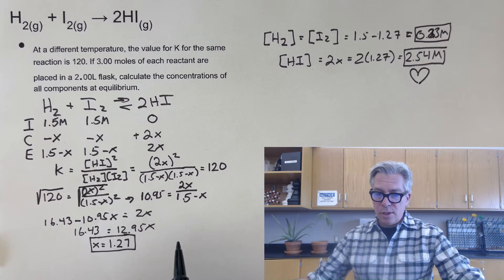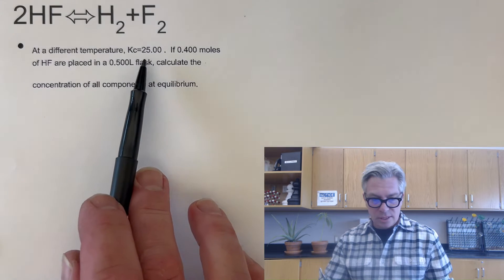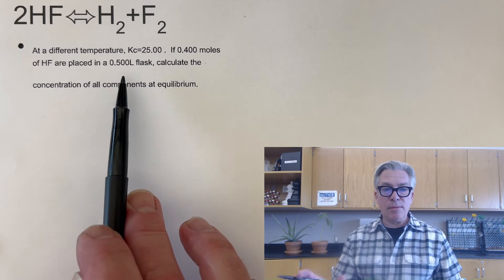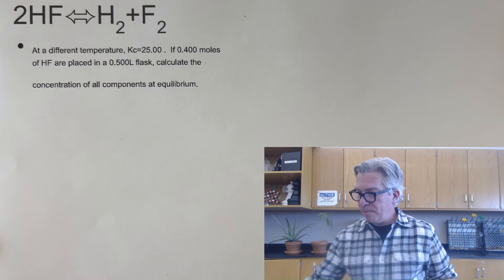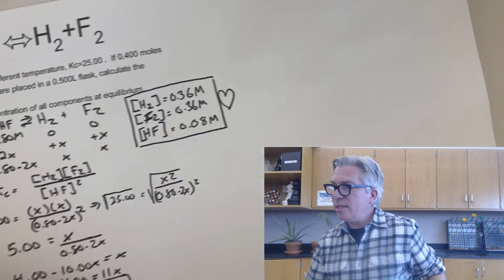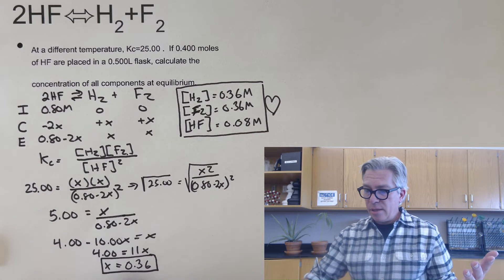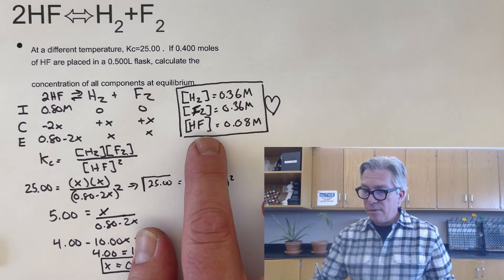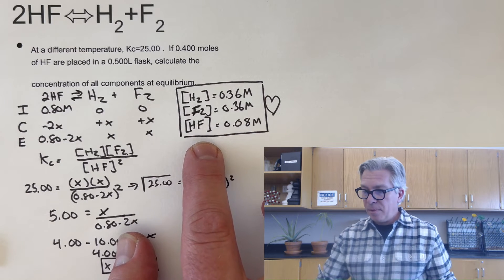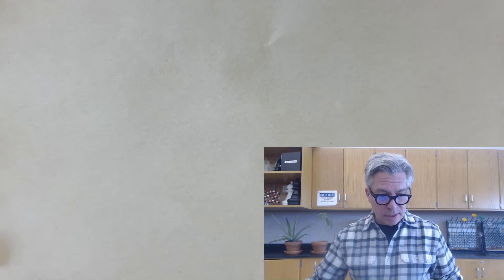Our first pause the video moment is for you to try one on your own. It's a similar reaction and a similar calculation after you set it up. So here's a reaction at a different temperature. The KC is 25. If 0.4 moles are placed in a 0.5 liter container, calculate the concentration of all components at equilibrium. Take a moment and pause the video and we'll show the solution. So when I did this one, I got a solution of 0.36 for X. You can pause and check your work against mine. I got an X value of 0.36 using a very similar method, taking the square root of both sides and then simplifying. And I then went and answered the question. The H2 and the F2 are both 0.36 and the HF is 0.08, which is 0.8 minus two of those. So hopefully you got that right. If not, just go back and check your work and see how it went.